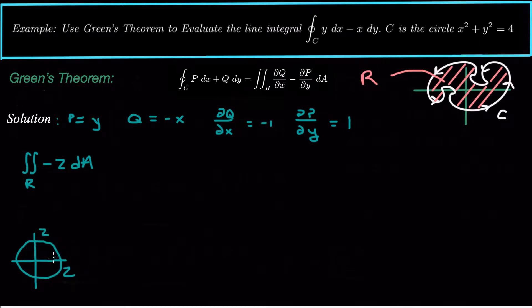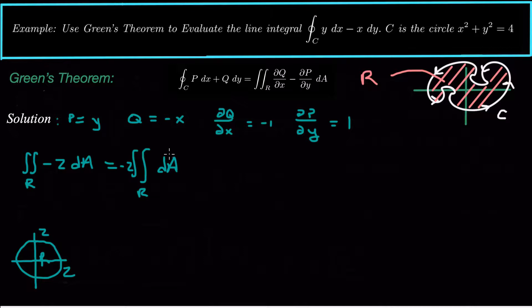So this double integral becomes the double integral of negative 2 over the circle, dA. You might notice that the double integral of 1 dA represents the area of the circle, so you could just take negative 2 multiplied by the area of the circle to get the answer. But let's say we don't always have the ability to just take out the negative 2 — maybe we have a function we can't factor out — so we need to find the bounds of this double integral.